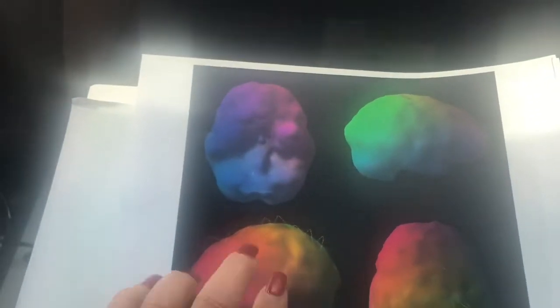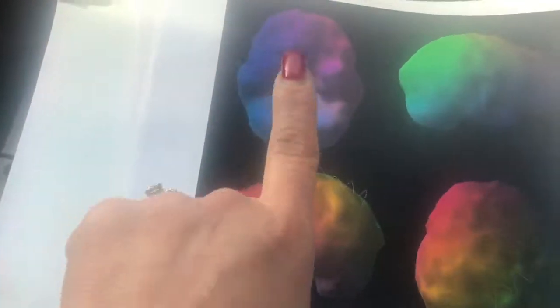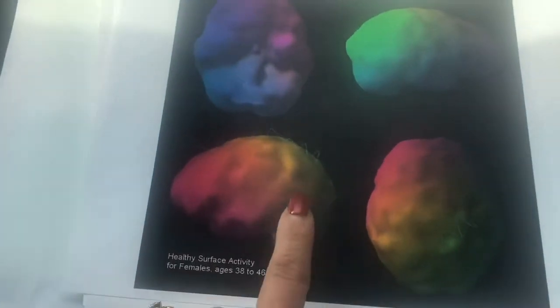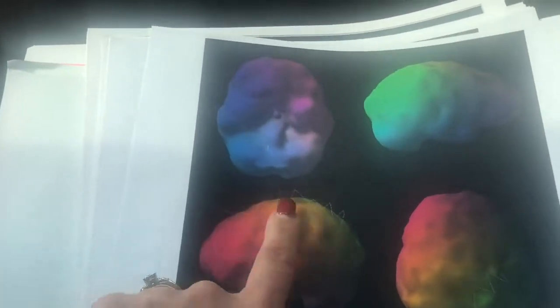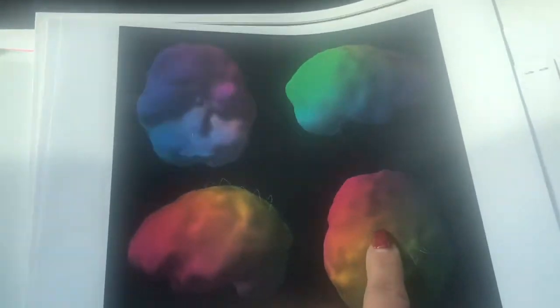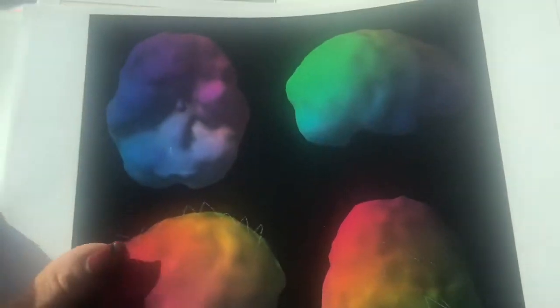On this scan, you can see this is like the bottom view of the brain looking up. This is a side view, and as you can see, it's mostly smooth, not jagged. This is from the top of the brain looking down, and this is a side view also. So you can see, for the most part, for a female ages 38 to 46, this is what a normal healthy brain would look like.